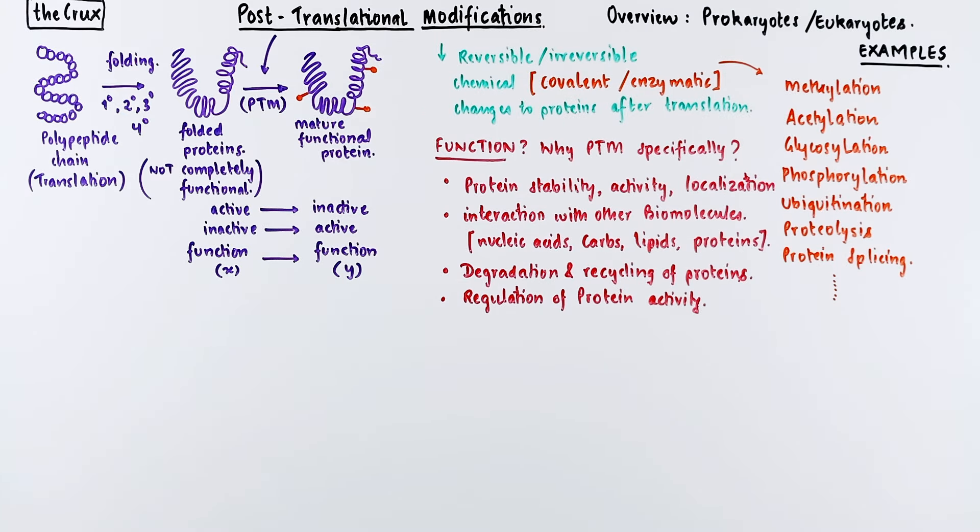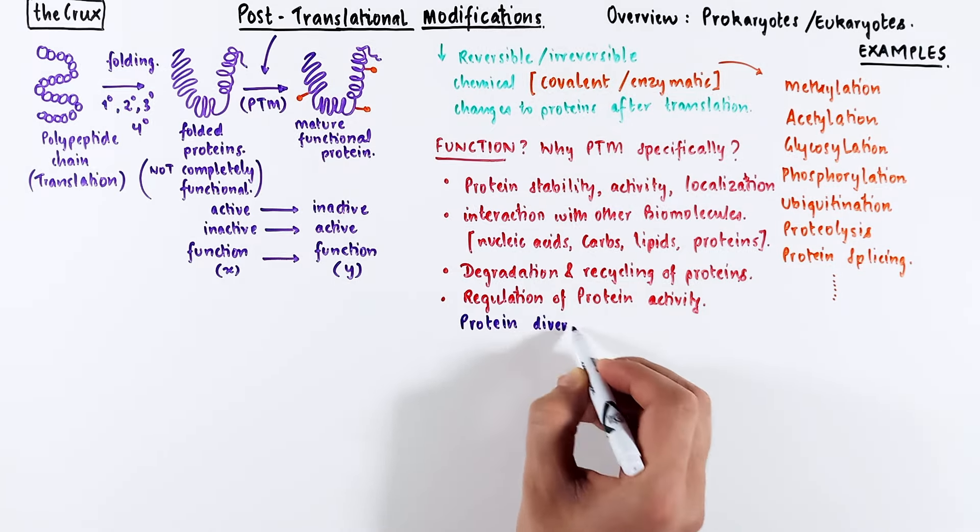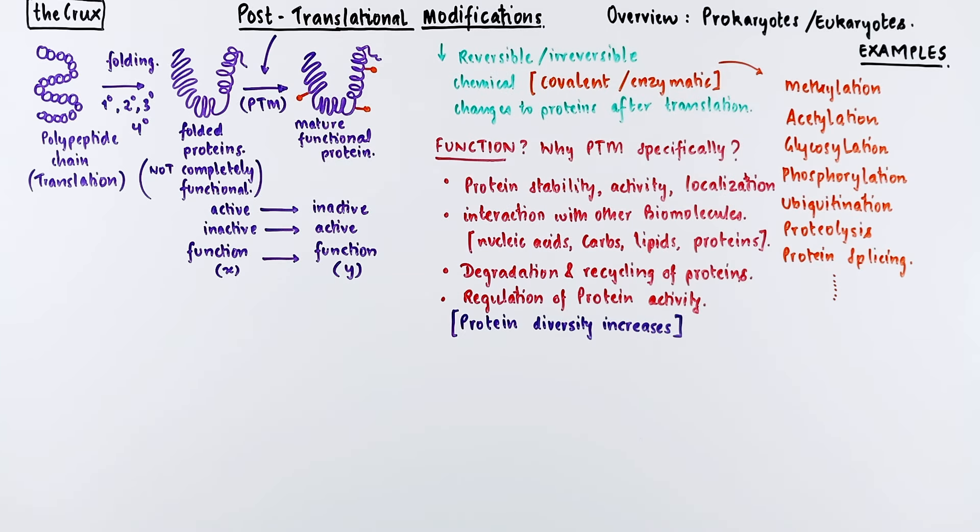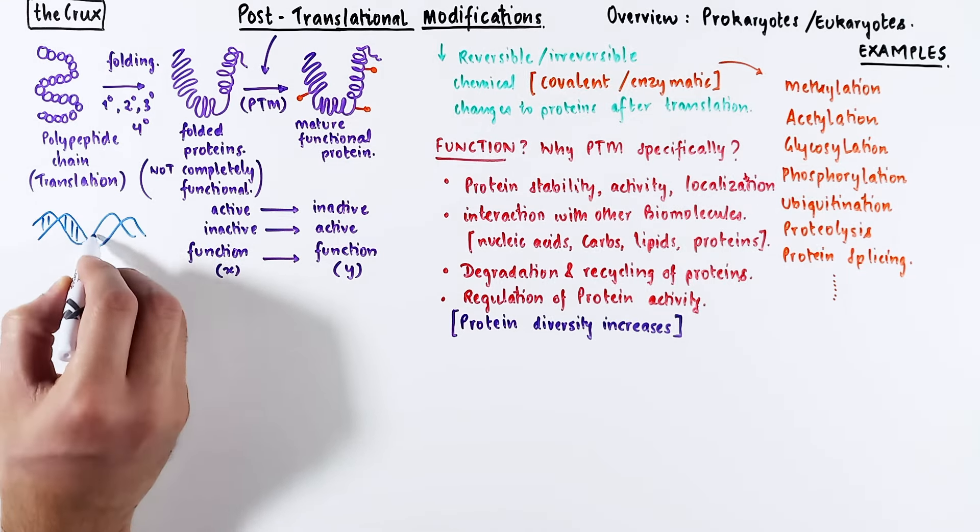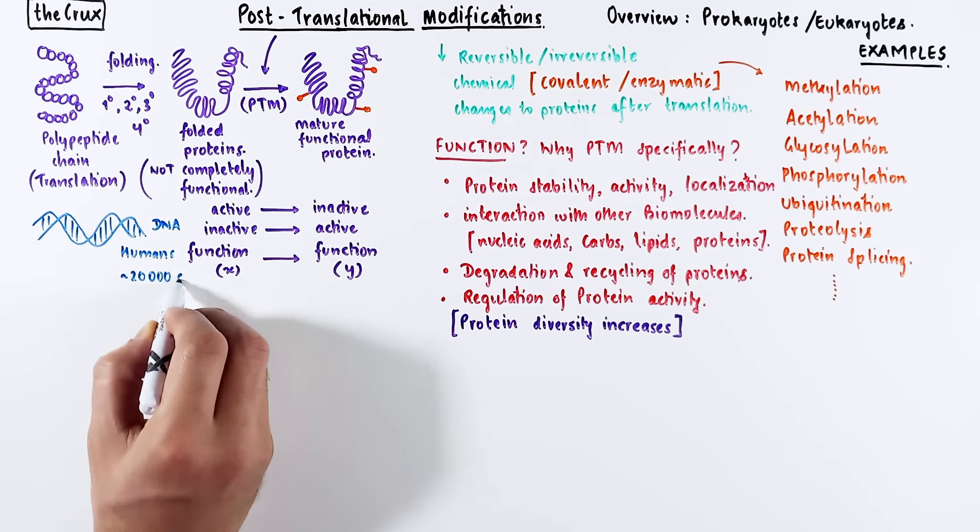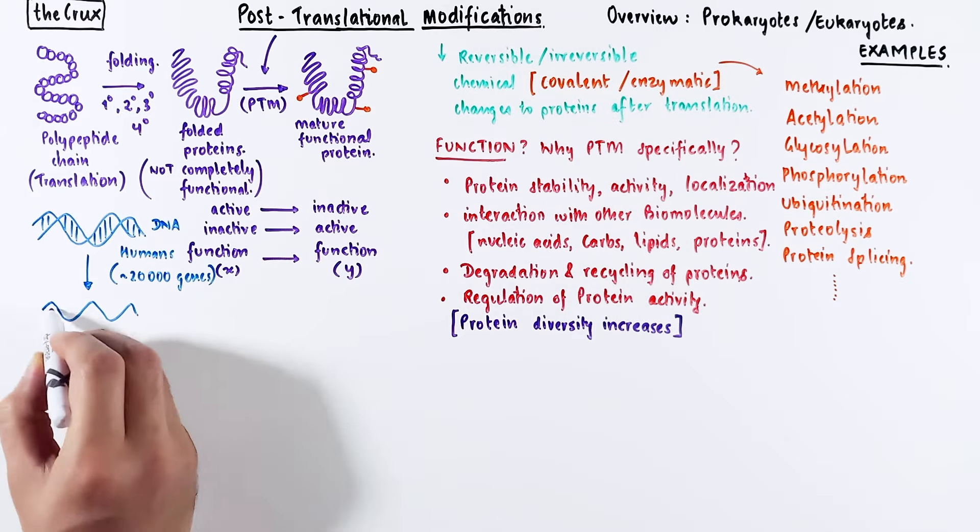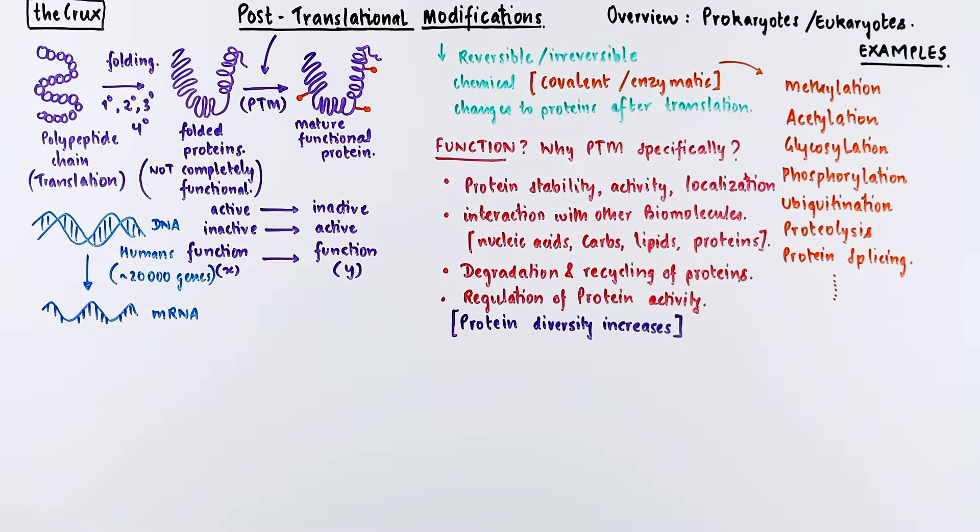The main idea that post-translational modification puts forth is actually quite bigger. In essence, these modifications increase the protein diversity in a cell. In a cell, information is stored in the DNA, which has protein coding elements called genes. Humans have around 20,000 genes that encode for proteins. Each gene can be turned into RNA through transcription.